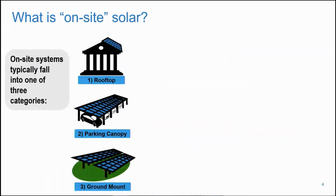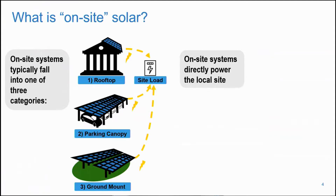This first section is meant to explain on-site solar at a high level so that everyone in the room has at least a base understanding of on-site solar. We include icons to illustrate that on-site systems typically fall into rooftop, parking, or ground mount systems, and directly feed into and power the local site to reduce its electrical usage.